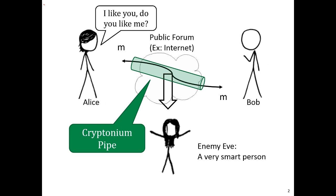At a high level, the goal of cryptography when securing communication is to provide this idea of a cryptonium pipe. Alice and Bob are going to share messages on a public forum, and this cryptonium pipe protects those messages against enemies and adversaries. In cryptography, we typically call these people Eve.